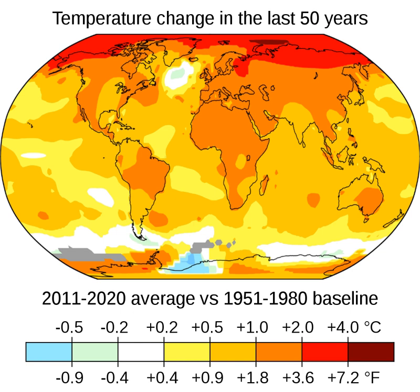Higher atmospheric CO2 concentrations have led to changes in ocean chemistry — an increase in dissolved CO2 is causing oceans to acidify. In addition, oxygen levels are decreasing as oxygen is less soluble in warmer water. Dead zones in the ocean, regions with very little oxygen, are expanding too.